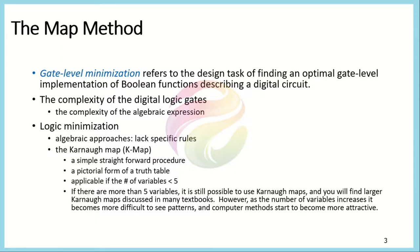In gate level minimization, so far we have discussed how we can minimize any given Boolean function in terms of literals and terms by using the Boolean postulates and theorems. In this part we will be discussing a more systematic approach known as the Karnaugh map or K-map. We will be focusing on K-maps for less than five input variables.